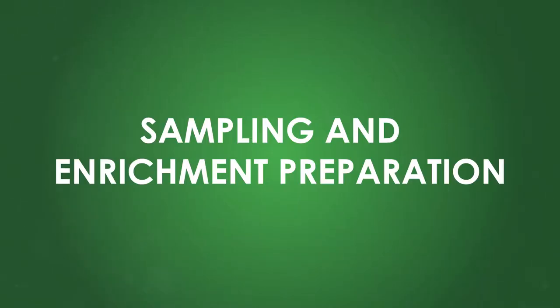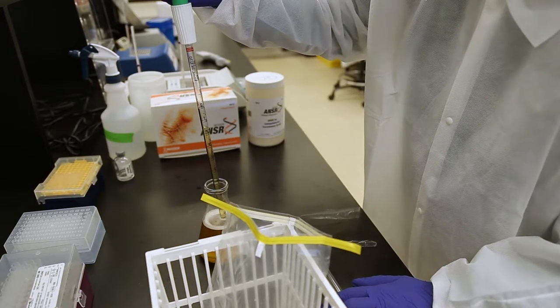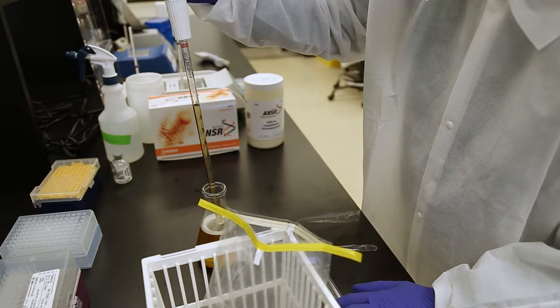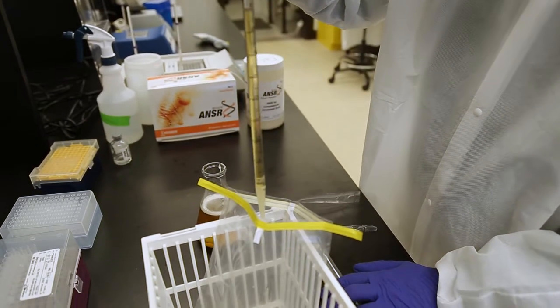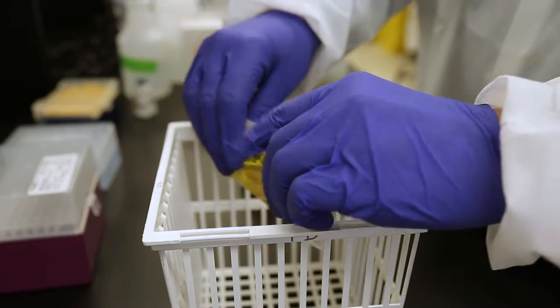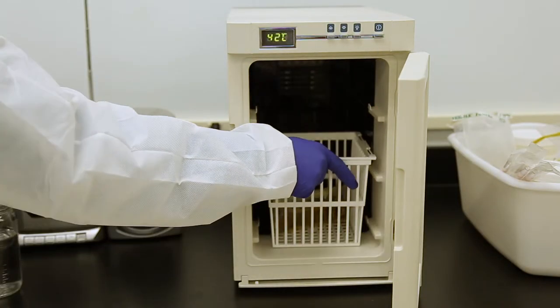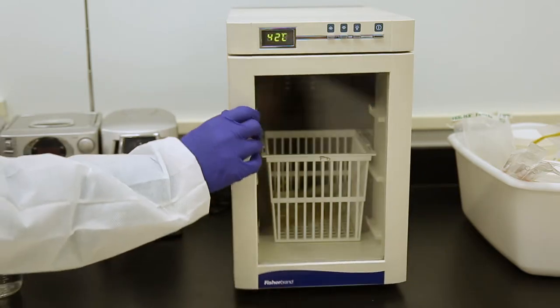Sampling and enrichment preparation. This video demonstrates the procedure using poultry rinse and environmental samples with Neogen's ANSR Campylobacter enrichment broth media. Do not autoclave the media. Weigh out the appropriate amount of sample and rehydrated media into a sterile stomacher bag. Close up the stomacher bag and incubate at 42 degrees Celsius plus or minus one degree for the amount of time listed in the kit insert.